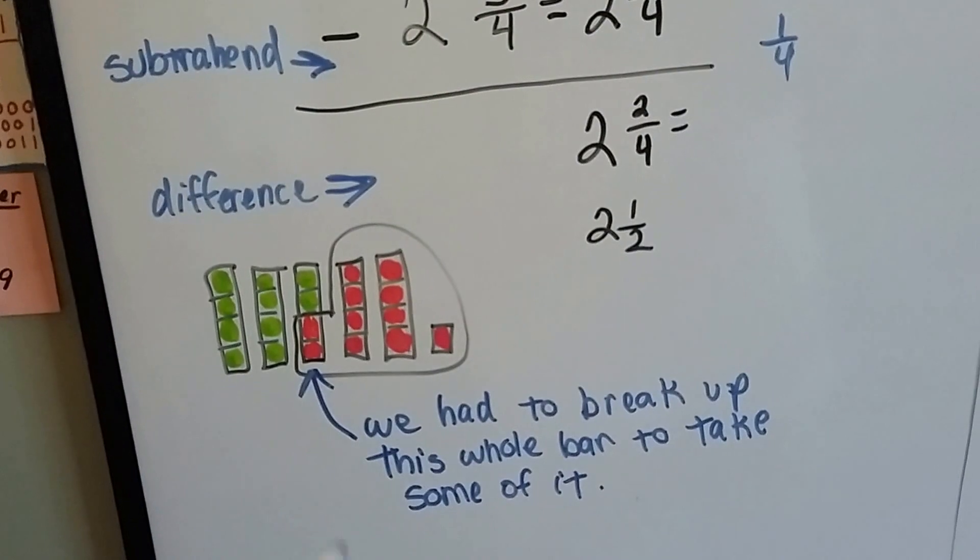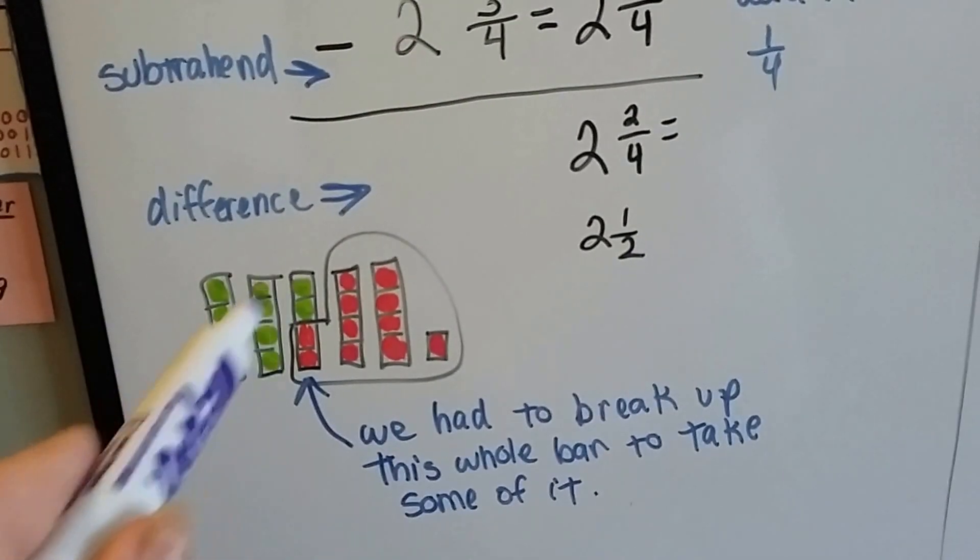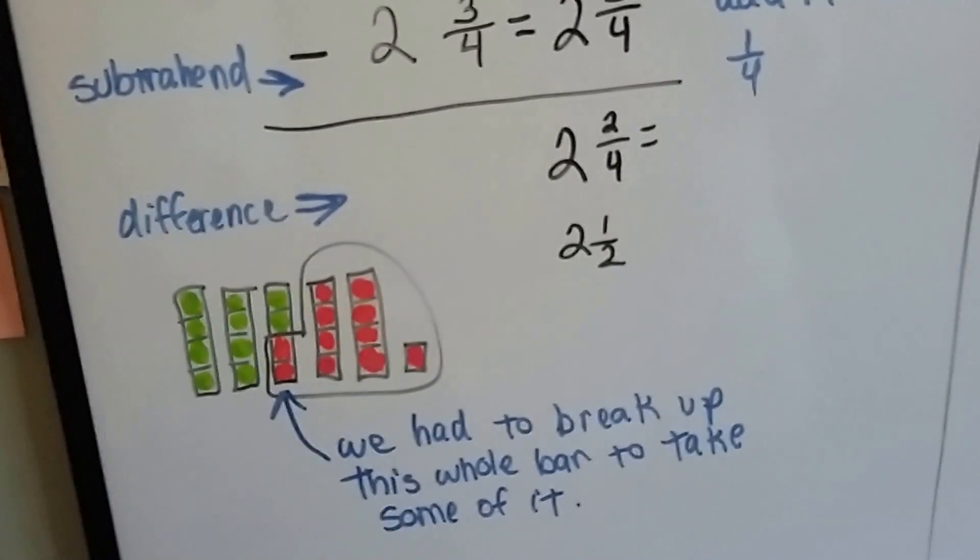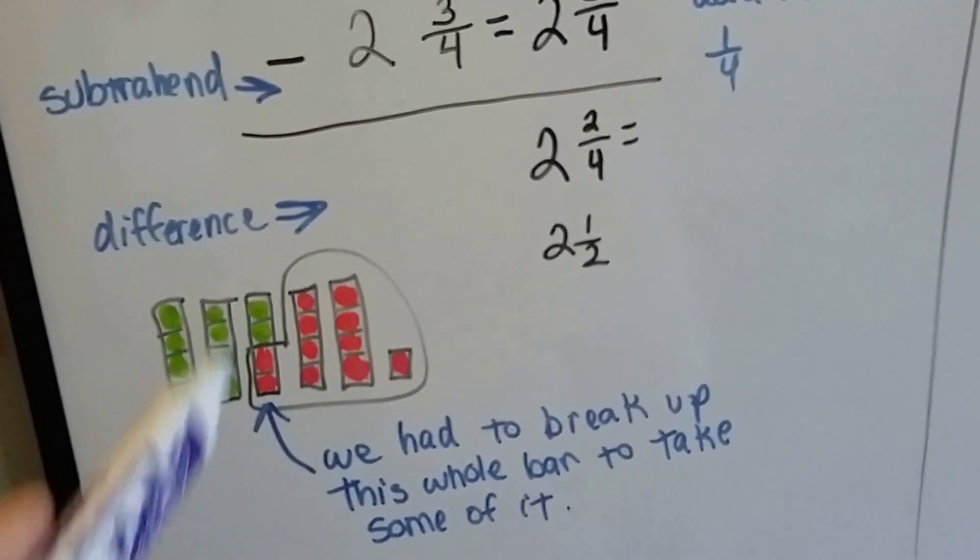That's what we did, and we took some of it, and now what's left is the green 2 and a half. Because we took 2 and 1, 2, 3 fourths, and it left the 2 and a half.